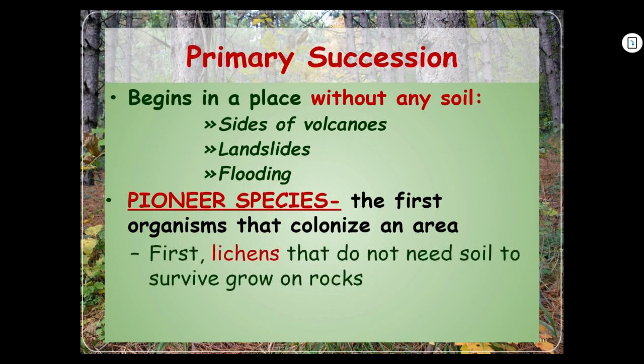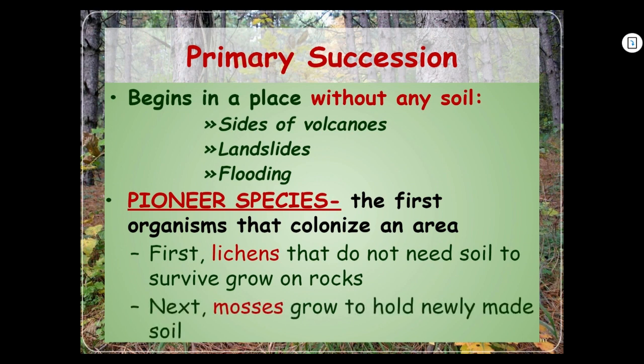First, you have what are known as lichens — that CH is pronounced like a K. Lichens do not need soil to survive; they grow on rocks. Most organisms, most producers, are going to need some kind of soil, but lichens can grow right on rocks. And then after the lichen, you get mosses. Mosses grow to hold newly made soil. If you don't have anything on a rock, soil tries to settle but wind will just blow it right off.